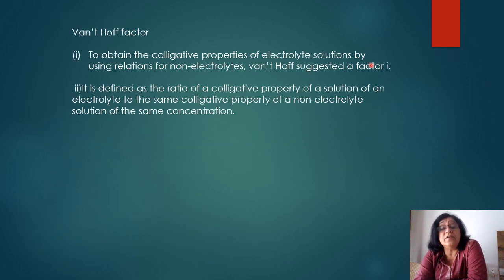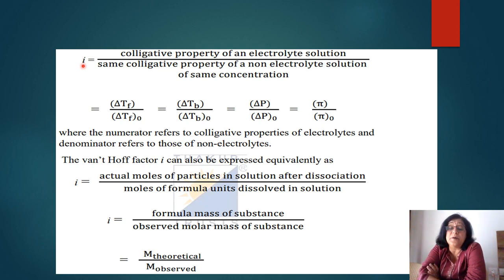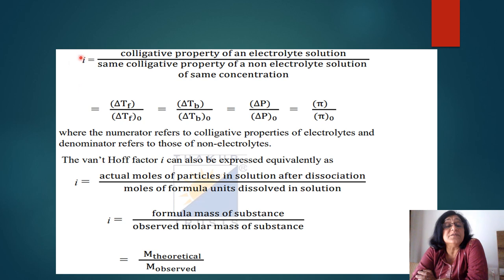To account for this, Van't Hoff suggested a factor i, defined as the ratio of the colligative property of an electrolyte solution to the same colligative property of a non-electrolyte solution. It is represented by small i and is given by: i = ΔTf(electrolyte)/ΔTf0 = ΔTb/ΔTb0 = ΔP/P0 = π/π0. This ratio also equals the actual moles of particles after dissociation divided by the moles of formula units dissolved.